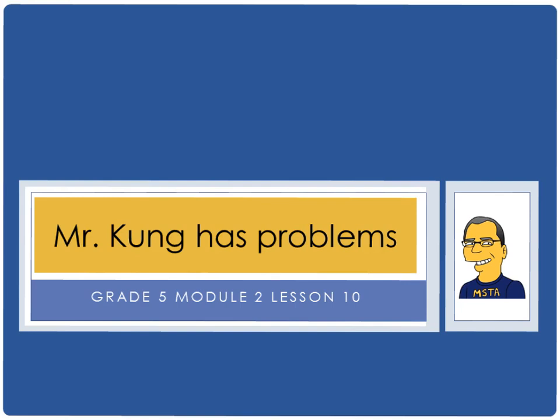Hello, and welcome to another episode of Mr. Kong Has Problems. Tonight, in grade 5, we are working on Module 2, Lesson Number 10, and tonight we are multiplying decimal fractions. We've previously not been using decimals. We're multiplying decimal fractions with tenths by multi-digit whole numbers using our place value understanding, and we're recording partial products. So let's take a look at what that means for us today.